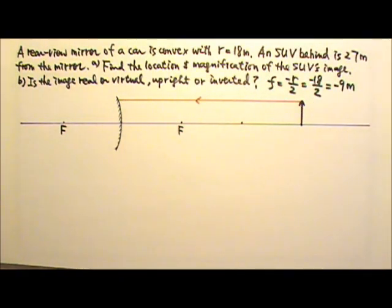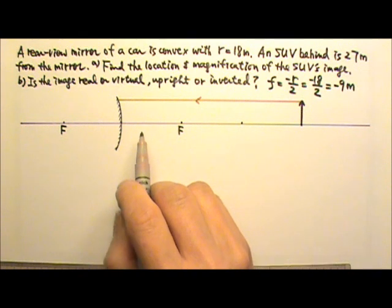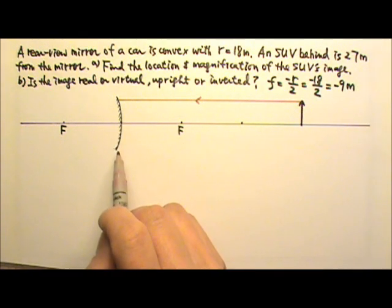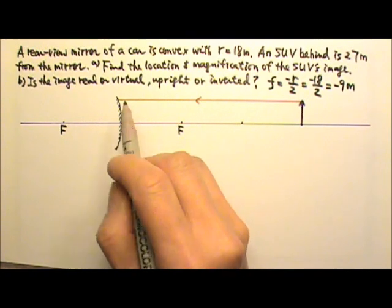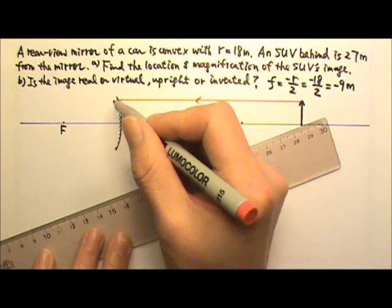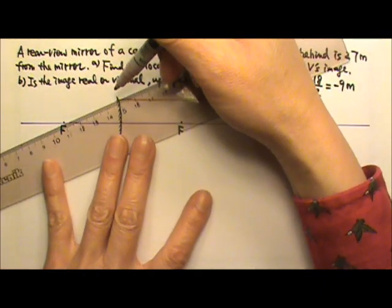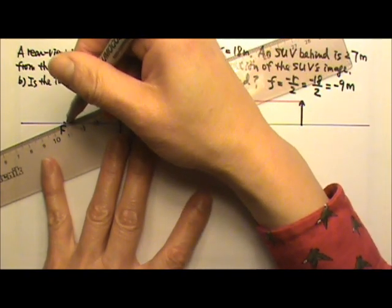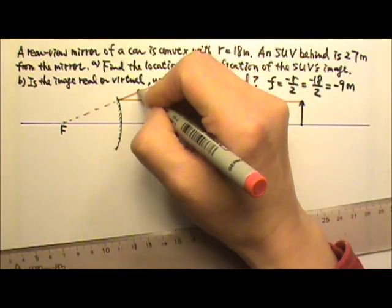Where does this ray go? The paraxial ray gets reflected and would go to the focal point — except this is a convex mirror, so it actually diverges the light. The reflected ray is not going to go to the focal point, but the extension of the reflected ray would go to the focal point. So this light ray gets reflected away from the center, and its extension will go to the focal point.